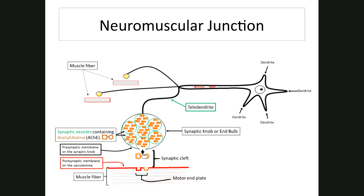The acetylcholine released by the synaptic vesicles fuses with the presynaptic membrane to dump into the cleft and diffuses across to bind to receptor sites, eventually starting another impulse on the post-synaptic membrane. So the impulse is electrical down the axon and telodendrite to the synaptic knob, then chemically transported across the cleft to start another electrical event. Acetylcholine (ACH) changes the sarcolemma's membrane permeability, resulting in an impulse that causes the muscle to contract.